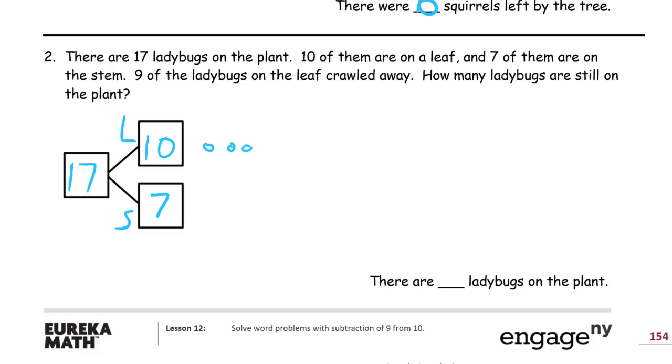One, two, three, four, five - two five groups, and then two more in the next group. So we have our ten, we have our seven.